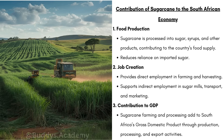Secondly, sugarcane farming provides job creation. It provides direct employment in farming, planting, maintaining and harvesting, and also supports indirect employment in sugar mills, transport and marketing. Thirdly, it contributes to the GDP. Sugarcane farming and processing add to South Africa's gross domestic product through production, processing and export activities. Sugarcane contributes billions of rands to the national economy, all the way from growing it and milling it to exporting it.